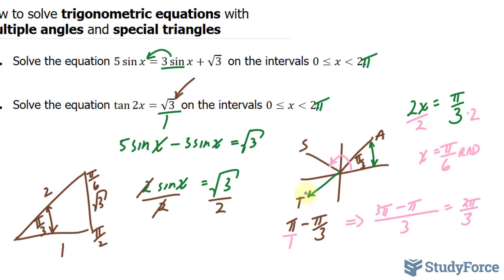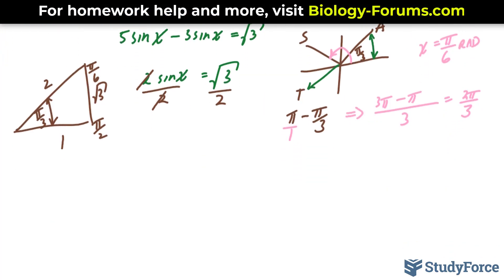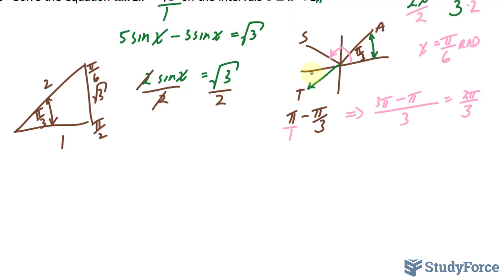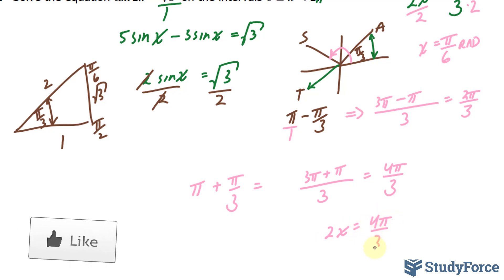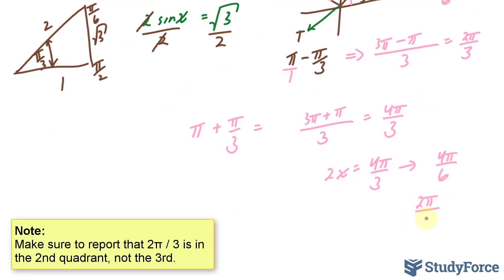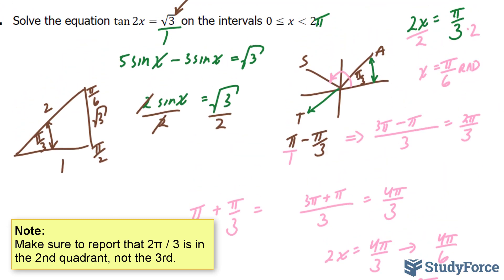For the angle in the third quadrant, the reference angle is the same: pi over 3. To find this angle we take pi and add pi over 3. Finding a common denominator of 3: 3 pi plus pi gives us 4 pi over 3. Since it's a double angle, 2x equals 4 pi over 3. Dividing both sides by 2 gives us 4 pi over 6, which reduces to 2 pi over 3. So the two angles are pi over 6 and 2 pi over 3.